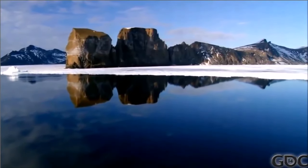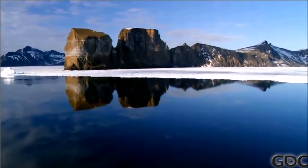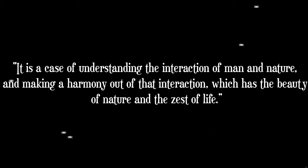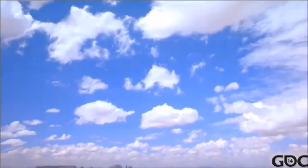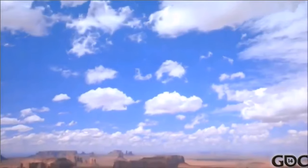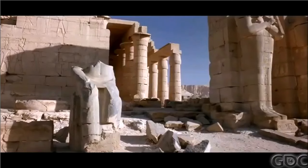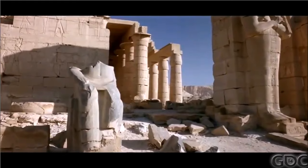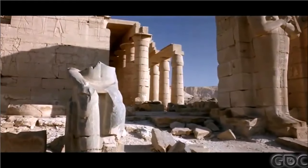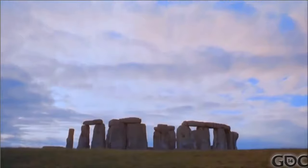What is life? Christopher is not defining life in the formal sense, but as an aesthetic property that transcends the sum of its parts. He states: "It is a case of understanding the interaction of man and nature, and making a harmony out of that interaction, which has the beauty of nature and the zest of life." In essence, life is some intangible property that we assign with the labels truth, beauty and wisdom. It is something that speaks to all of us and is contained in all the great works of science, art and design. Anything, even decidedly dead things, can have life — and that means that we can, through our own creative capacities, bring life into the world.